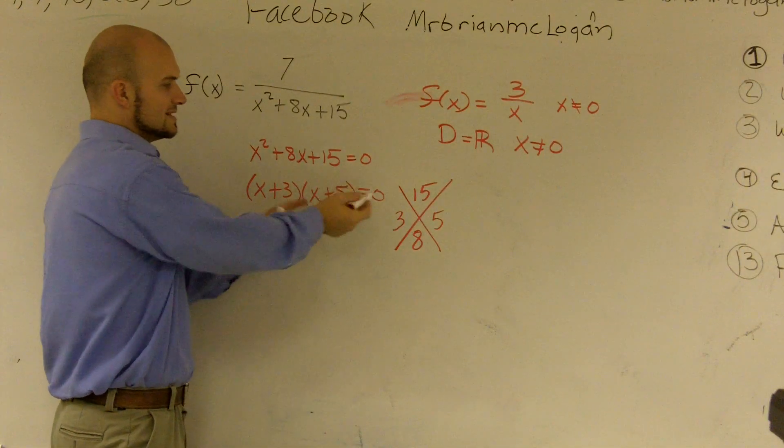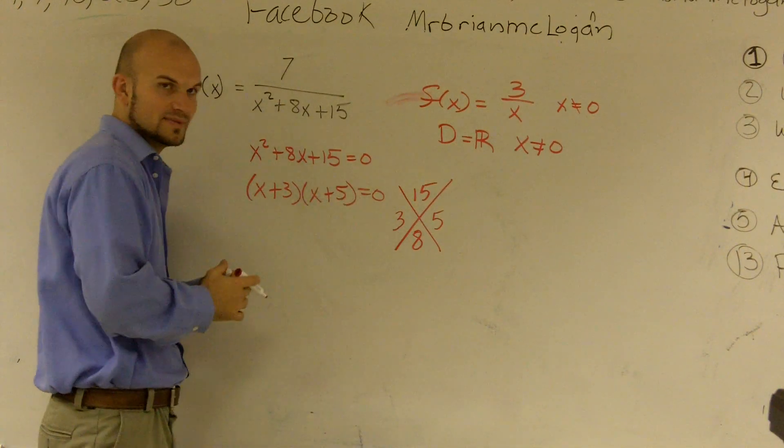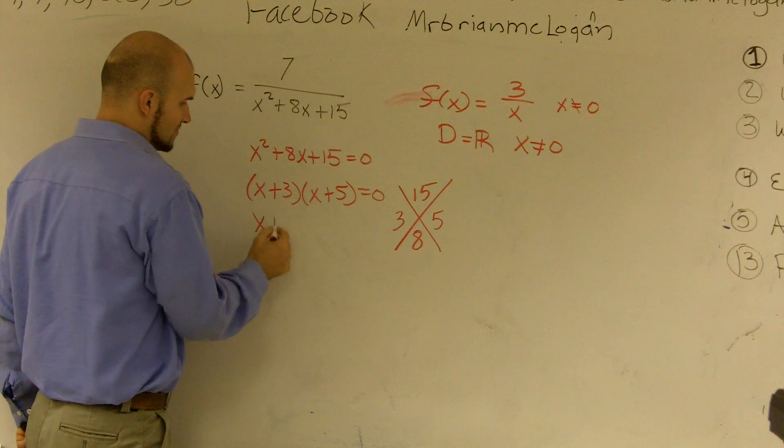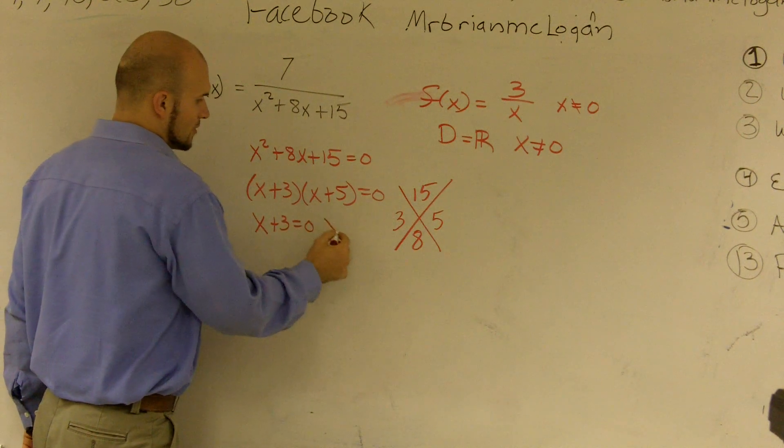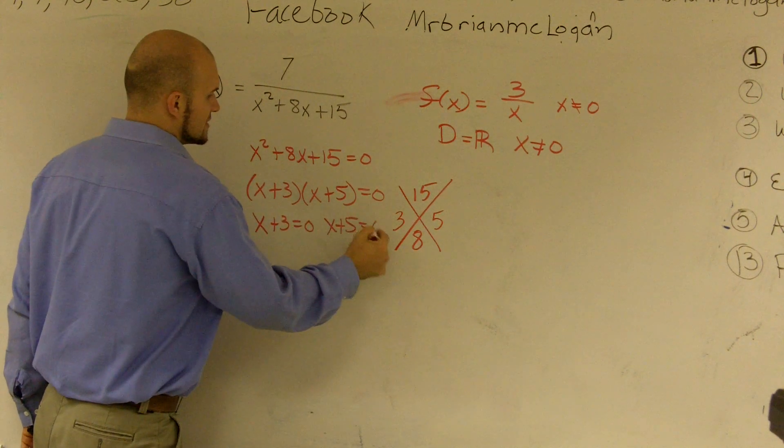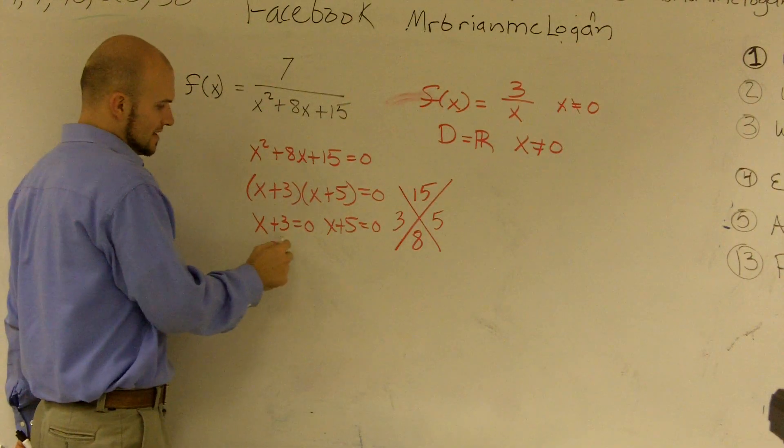Now, either one of these multiplied to give me 0, so therefore, one of these has to be 0. So you can say x plus 3 equals 0 or x plus 5 equals 0. Therefore, if I subtract 3,